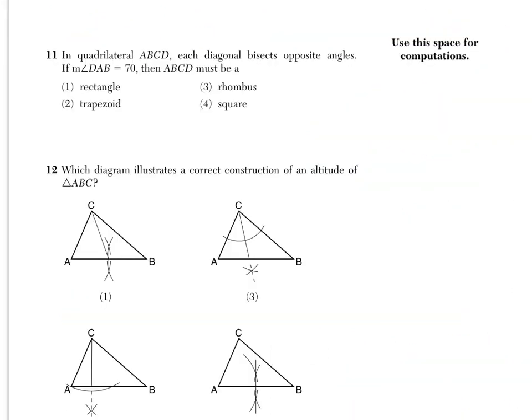Number 11 says, in quadrilateral ABCD, each diagonal bisects opposite angles. If the measure of angle DAB is 70, then ABCD must be blank. Now this is a question that you definitely need to draw a picture for. We know it's a quadrilateral that bisects opposite angles. So I'm going to try to draw this the best that I can to show that these opposite angles are going to be bisected, meaning they're giving us congruent parts, congruent angles. This is ABCD. Always go around in a clockwise or counterclockwise fashion.